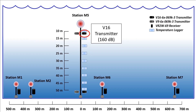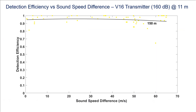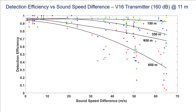Looking at the detection data from the higher power V16 transmitter also located at 11 meters depth, we see a similar pattern. At a transmitter-to-receiver distance of 150 meters, changes in sound speed difference have little impact. As the distance between the V16 transmitter and the receiver increases, while we do see a drop in detection efficiency with increasing sound speed gradient, detection efficiency remains higher in the presence of a thermocline at all distances than was the case for the V9 transmitter. This suggests that the impact of sound speed difference on detection efficiency becomes observable at a certain distance, which we will estimate using Bellhop modeling on the Eastern Lake Ontario field data.